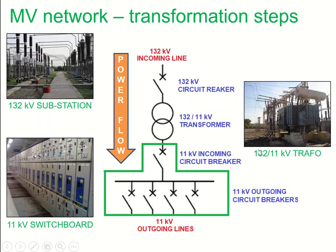To have a further clear understanding, we can take help from a power SLD. This is the same as what we have discussed earlier. Power flow is from the high voltage circuit breaker to a step-down power transformer, from where it enters the incoming circuit breaker of the 11 kV switchboard, and then is distributed to consumer sites using the 11 kV outgoing circuit breakers, which are shown in the lineup here.